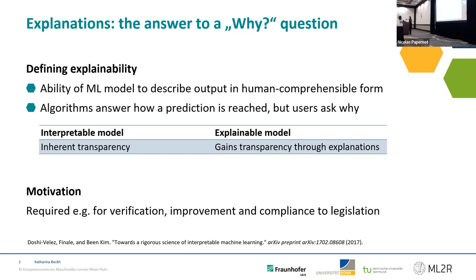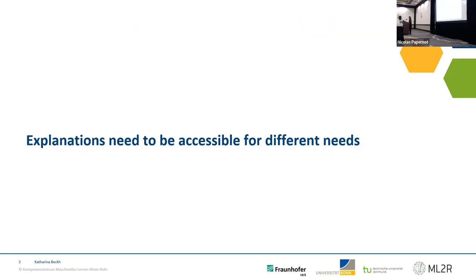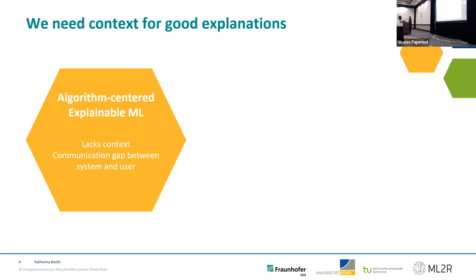Starting with our work, I want to make a claim: explanations need to be accessible for different needs. What I mean by different needs is that you have different user groups. You may have a physician which needs a different explanation than a patient, and you may have visually impaired who will need different explanations than other people. With that in mind, let's look at what currently is available.